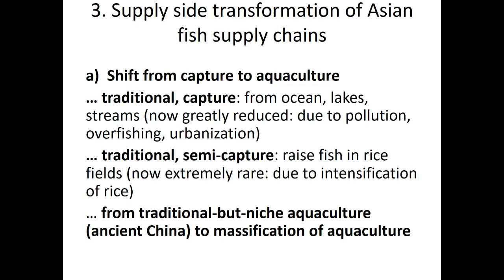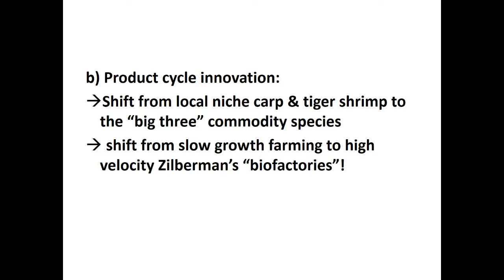With such a demand-side earthquake, you're bound to see supply chain changes. In aquaculture, what you've seen is a shift from capture to aquaculture. Traditionally, Asians got fish from oceans, lakes, and streams — now greatly reduced due to pollution, overfishing, and urbanization. They also got fish by semi-capture, raising fish in rice fields, but according to our research that practice has almost entirely disappeared due to the intensification of rice farming. It's gone from a traditional but niche practice in ancient China to a massification of aquaculture around Asia — extremely fast and sudden.